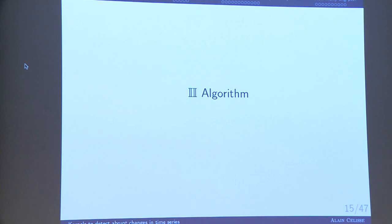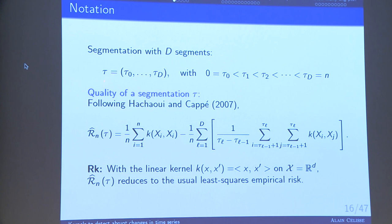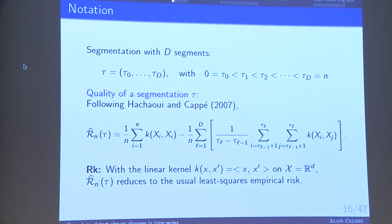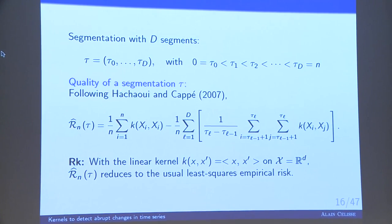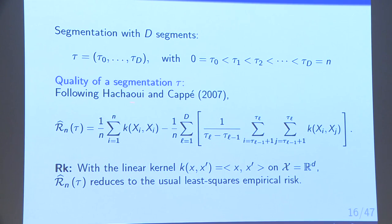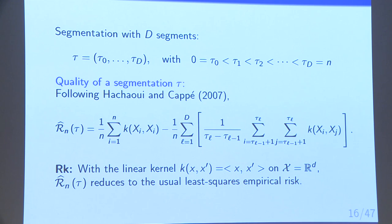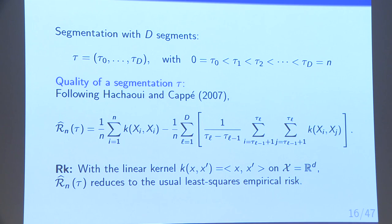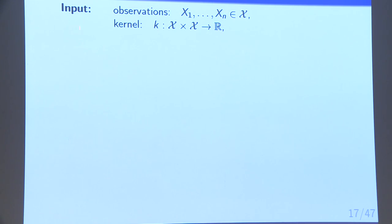Let us give some details about the algorithm. For a given segmentation τ in D segments, we use as a quality measure the same criterion as that used in Arlot and Celisse 2007, denoted Rₙ(τ), which has a closed-form expression. When we consider the linear kernel — simply the dot product between vectors in ℝᵈ — this quantity reduces to the classical least-squares empirical risk of the empirical minimizer. We then use the KCP algorithm.